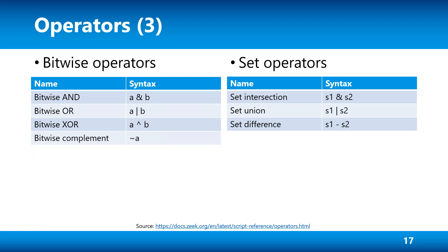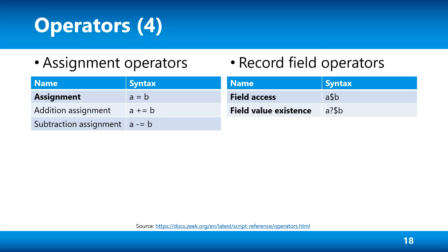Bitwise operators, set operators for the set container type (a unique unordered container list), and assignment operators are available. For records in Zeek scripting — kind of the same as struct in C or C++ — you can have multiple fields of different types. To access a field, you use the dollar sign rather than a dot. These fields can have the optional attribute, meaning they don't necessarily have to have a value. When parsing fields, you need to check if a field has a value using the value existence operator with the question mark dollar sign.